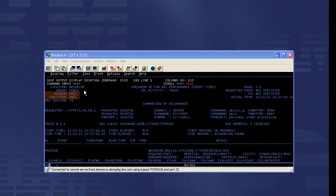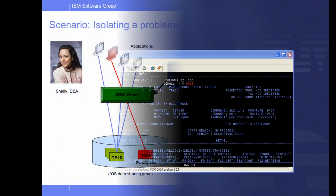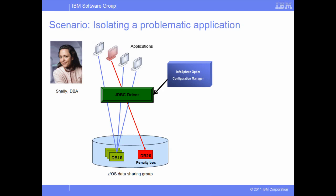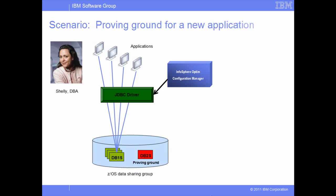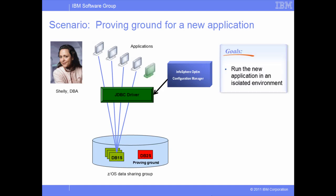Later, Shelly reads the Omegamon SQL Activity Trace report and confirms that the application is running in the penalty box. She is satisfied that by using Infosphere Optim Configuration Manager, she can easily isolate the application without causing a system outage. After the application is analyzed and tuned to acceptable levels of performance, Shelly can easily switch the application transactions back to the common data sharing. This application isolation scenario also applies when a new application is added to the system or when an existing application is changed significantly. The new application can be isolated into a proving grounds, which is a subset of one or more members of the data sharing group, where Shelly can test the new application. When the new application demonstrates stable resource consumption and performance, Shelly can switch to the common data sharing members.